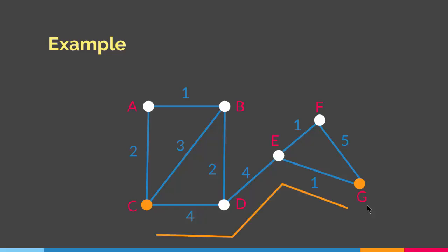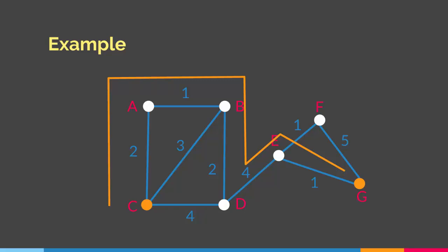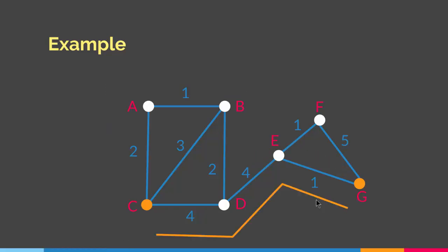I can go one way and the sum of the edges will be 4 plus 4 equals 8, plus 1 equals 9. If I go another way, it will be 3 plus 2 equals 5, plus 4 equals 9, plus 1 equals 10. Or I can go from C to A to B to D to E to G, where the total sum is 2 plus 1 equals 3, plus 2 equals 5, plus 4 equals 9, plus 1 equals 10. So the shortest path between C and G goes from C to D to E to G, with a sum of 9.